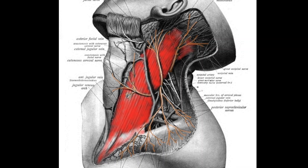After exiting behind the posterior border of the sternomastoid, the supraclavicular nerves divide into three branches: the anterior or medial, the intermediate, and the lateral branches.